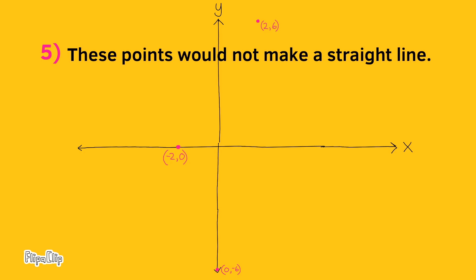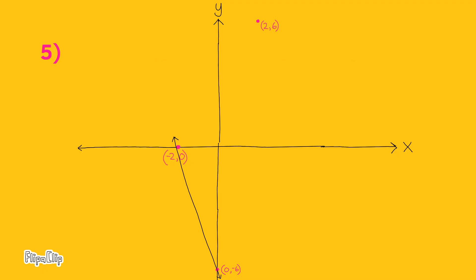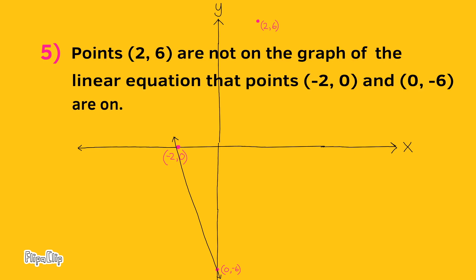All three of these points together would not make a straight line. Here's a look at the line that the first two sets of points create. As you can see, the points 2 and 6 would not land on that line. Points 2 and 6 are not on the graph of the linear equation that points negative 2 and 0, and 0 and negative 6 are on.